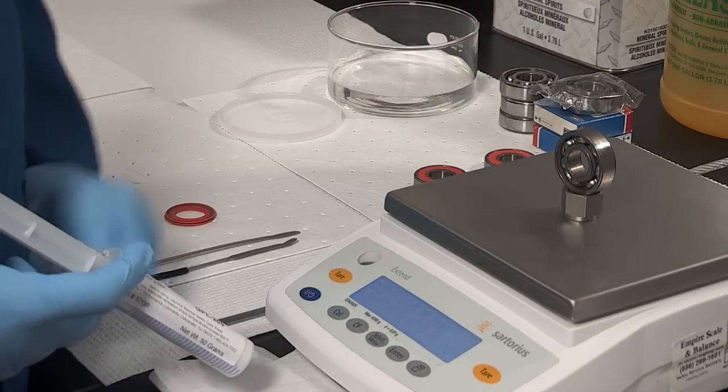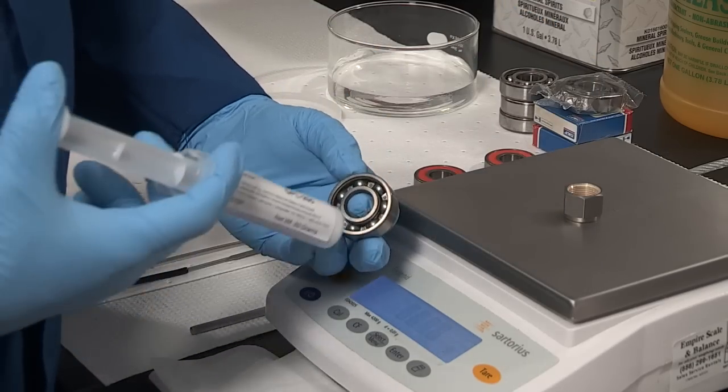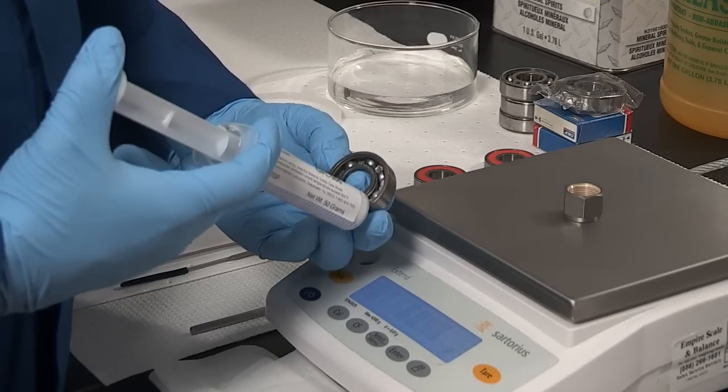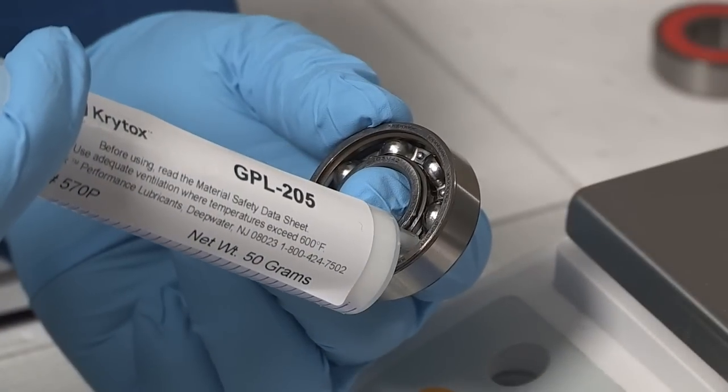Next, weigh the bearing and use a clean syringe of Krytox lubricant. If you are filling the bearing by volume, remember that the density of Krytox grease is about 2 grams per mil, or about twice the density of common hydrocarbon-based greases.